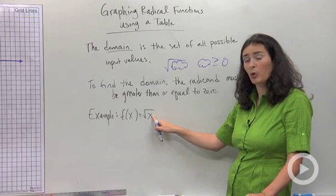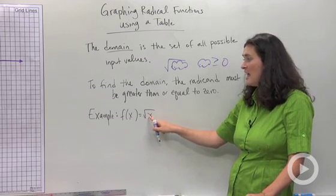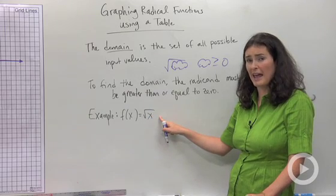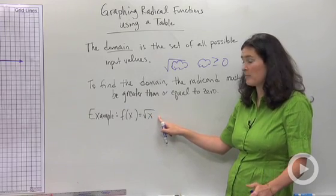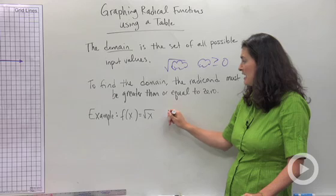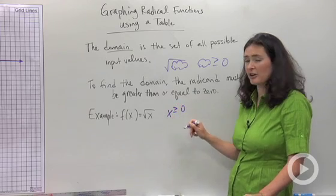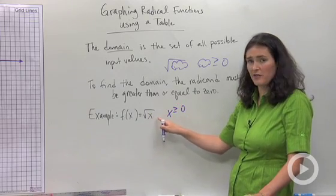Like in this problem, for example, we're going to look at the parent function. In order to find the domain or my x values that I'm going to put in my table, I'm going to start by setting my radicand greater than or equal to zero. Radicand is whatever is under the square root.